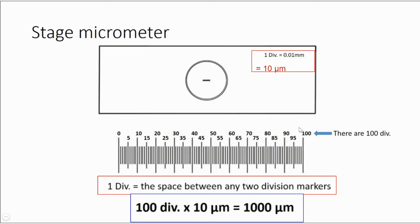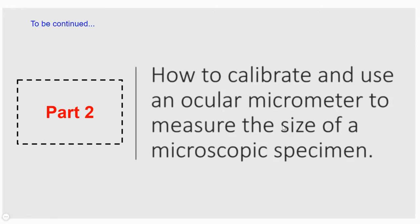When measuring an unknown object size, you always need a calibrated scale. But if you keep the stage micrometer on the stage, you cannot also place your specimen there. That is why the only thing that can help you measure the specimen is your eyepiece graticule. Since we don't have information about the size of the eyepiece graticule, in the next part of the video we will study how to calibrate it — that is, how to find the length of our eyepiece graticule using the stage micrometer, finding the value of an unknown scale using a known scale.